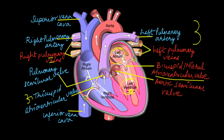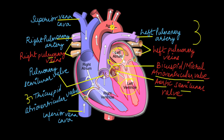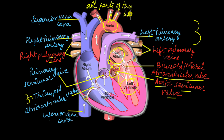From the left ventricle, blood is pushed past the aortic semilunar valve. As with the pulmonary semilunar valve, it ensures blood flows only in one direction with no backflow. Past this aortic semilunar valve, blood is pushed into the aorta, which is the largest blood vessel in our body. The aorta then branches into smaller blood vessels and supplies blood to all parts of the body. This is the general flow of blood through the heart.